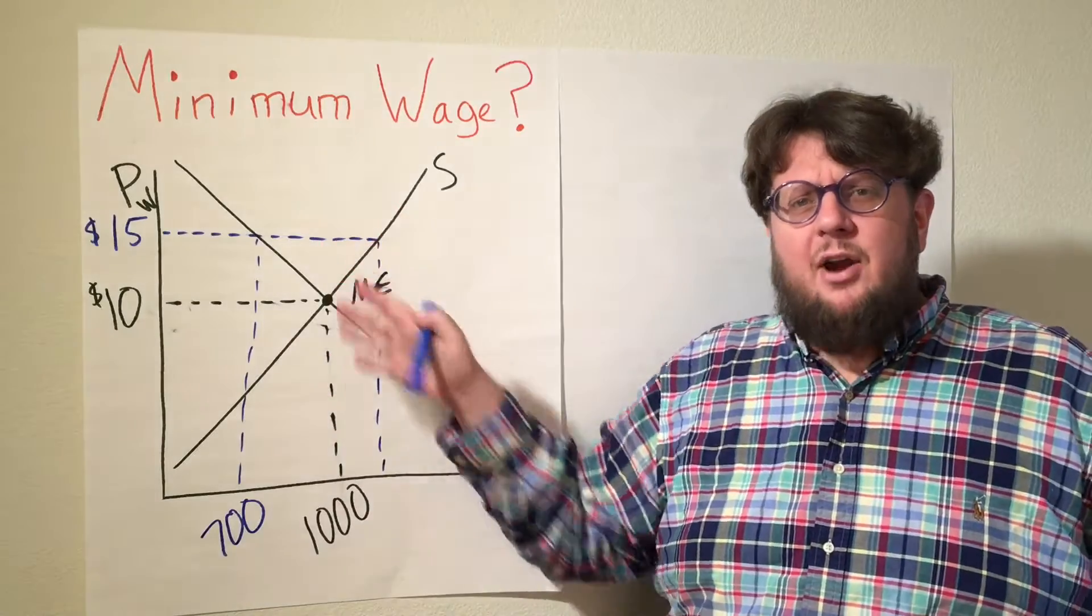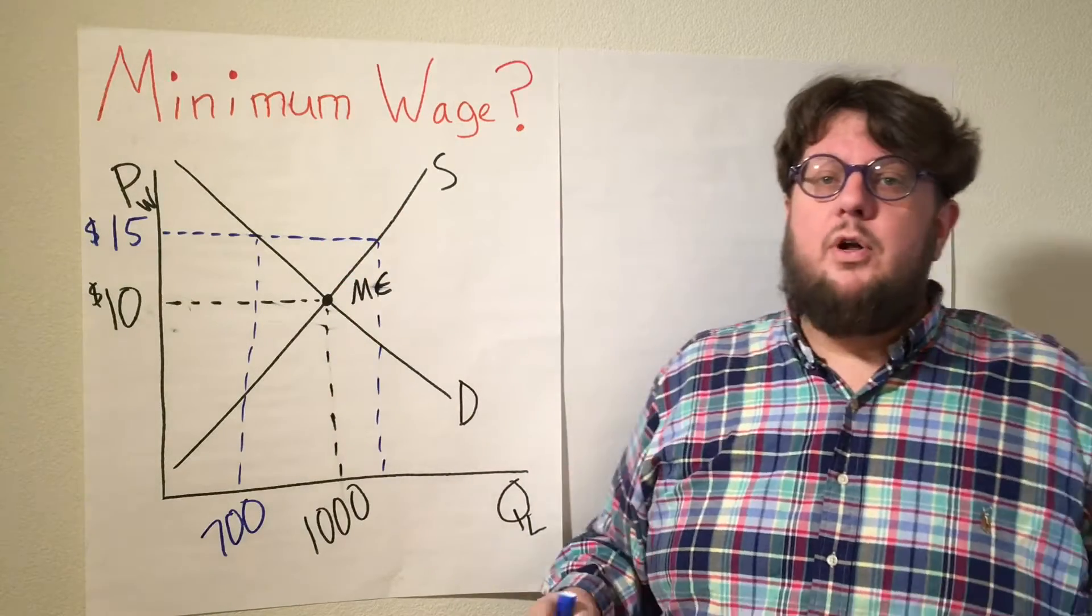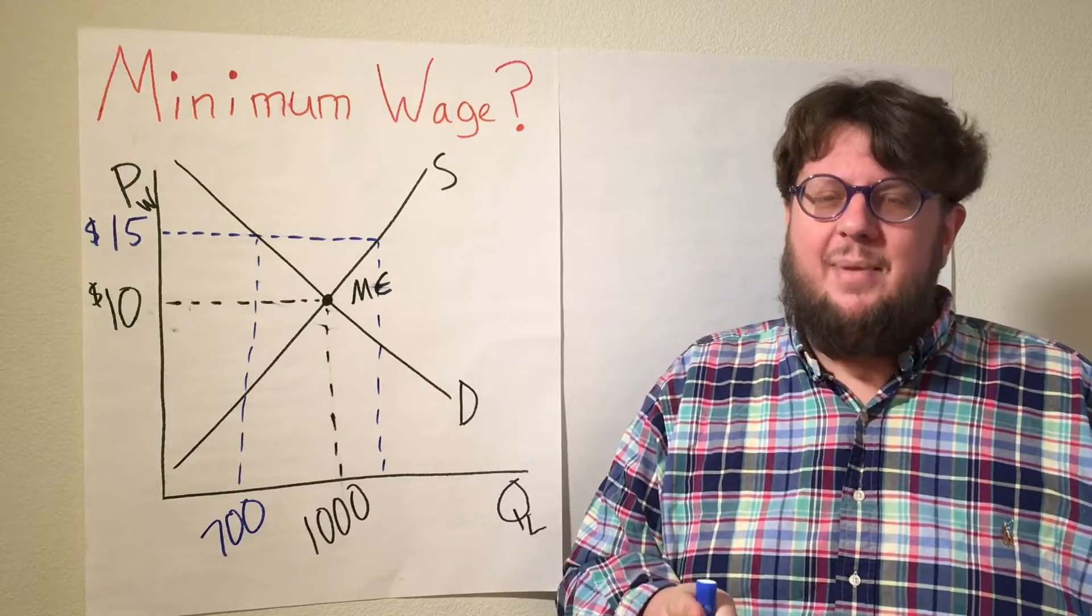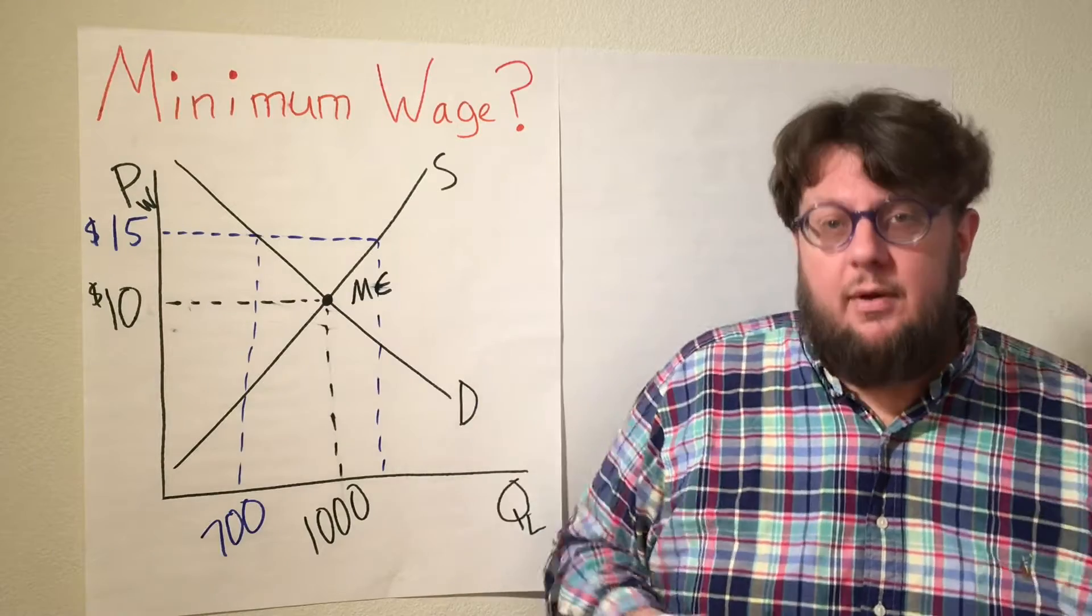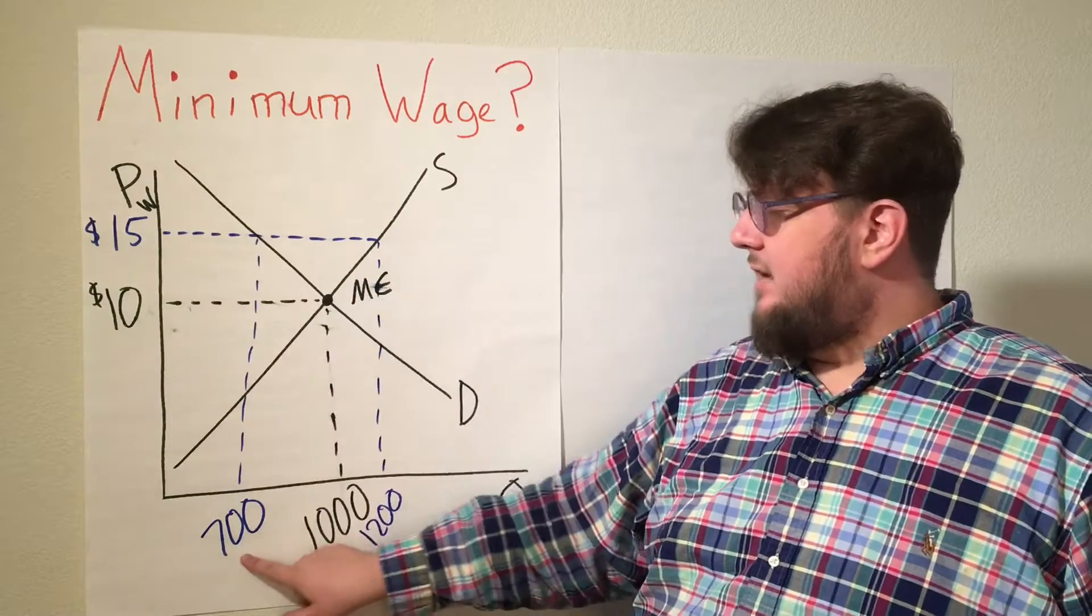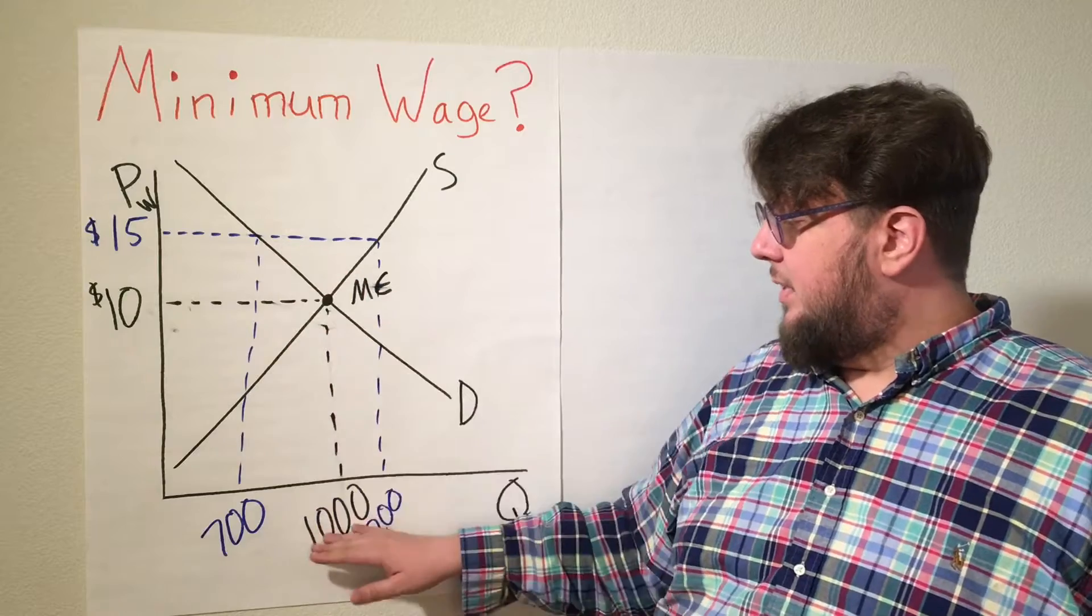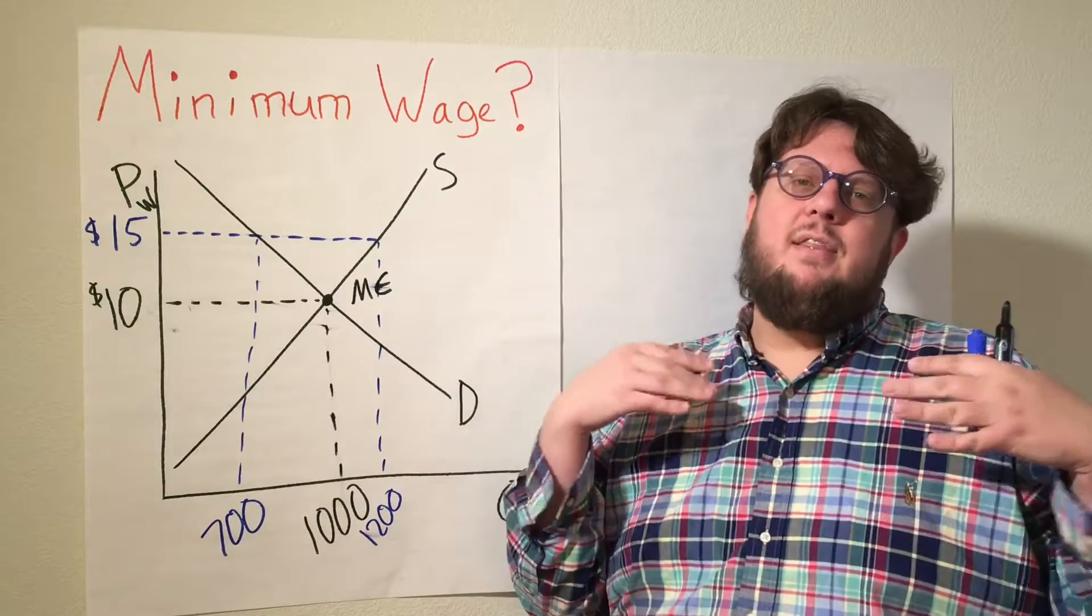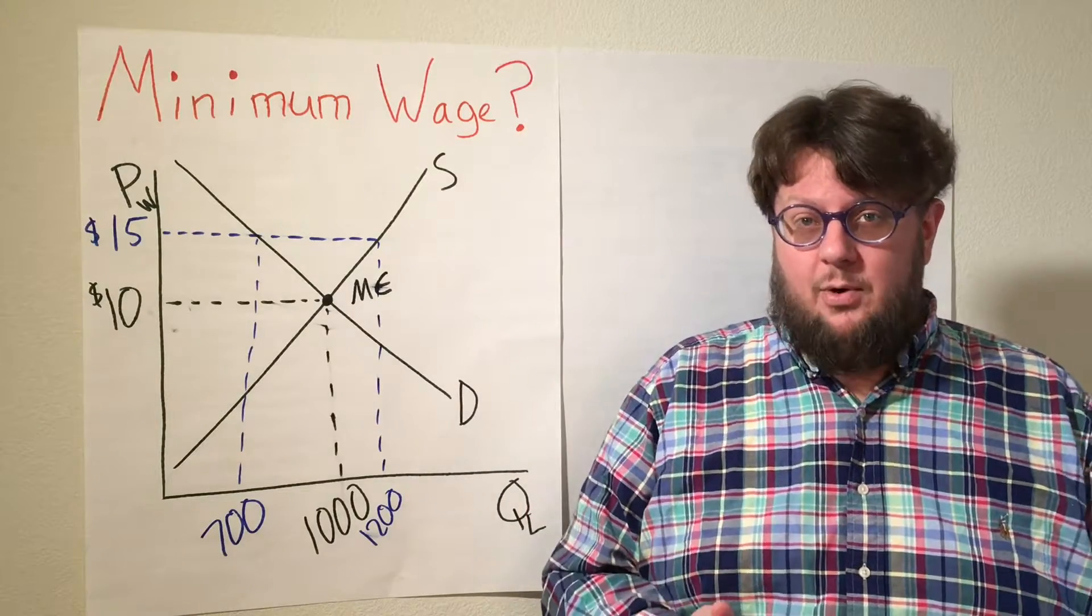But yet, because the wages are higher, people who are workers wish to either engage in more hours of work or those who were not working decide to join the workforce because now it's worth it for them. And so the supply of the market is now at 1,200 hours. And so we now have a demand of only 700 hours. And due to the price being what it is, we also have a supply of 1,200 hours, meaning that there's a surplus of labor or a surplus of workers in terms of 500 hours.